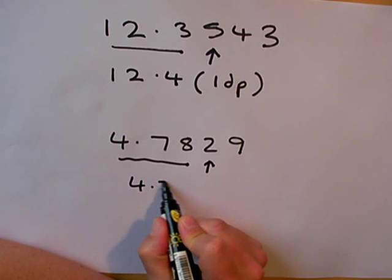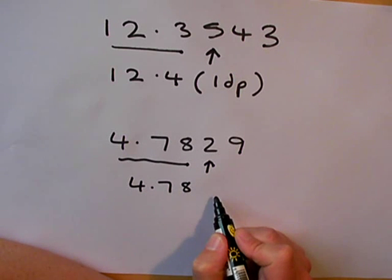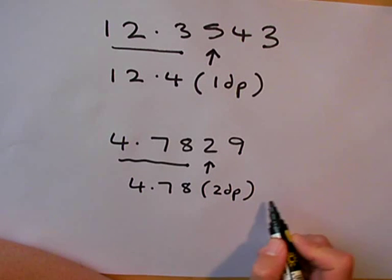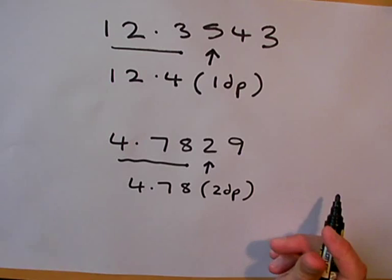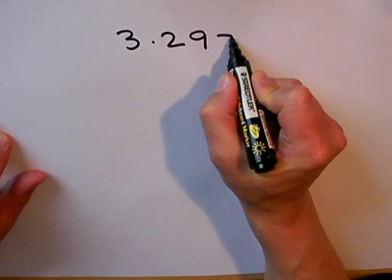Once I've rounded off, to show people that I've rounded off, I'm going to put into brackets 2dp afterwards. I'm going to show you another example of rounding off to so many decimal places.